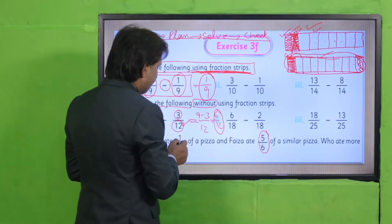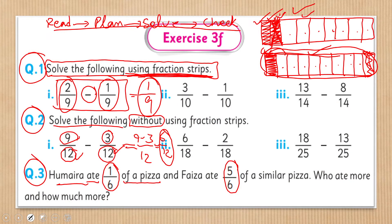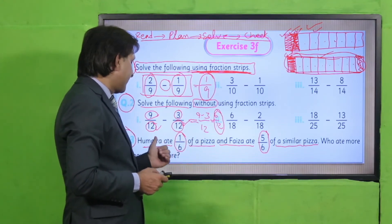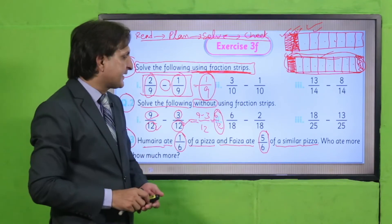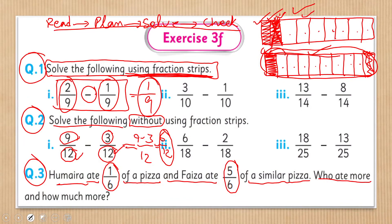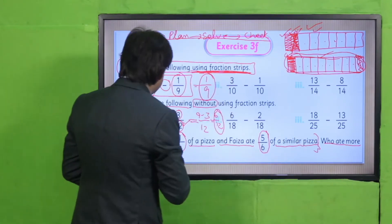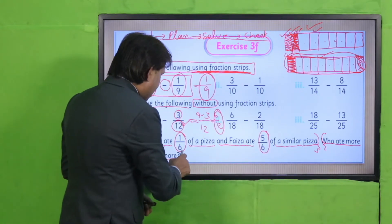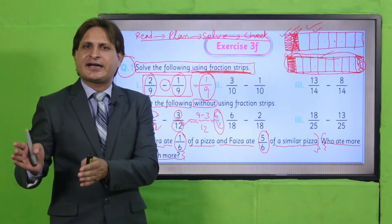Greater fraction कौन सी है और smaller क्या है — statement पढ़ें: Humera ate 1/6 of a pizza and Faiza ate 5/6 of a similar pizza। Pizza के six parts हैं — Humera نے 1/6 part کھایا اور Faiza نے 5/6 part کھایا۔ Question है: who ate more and how much more? यहाँ तक given facts थे — अब required part है कि find करना है पीजा किसने ज्यादा खाया।